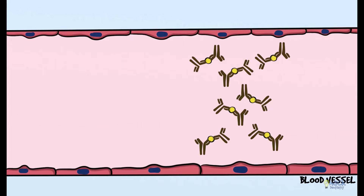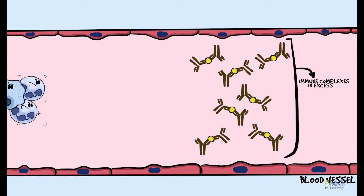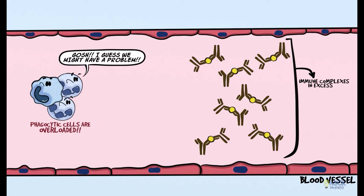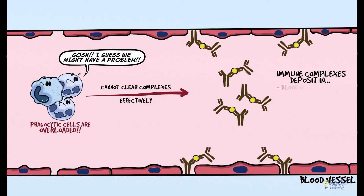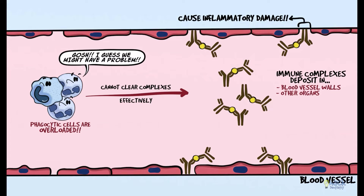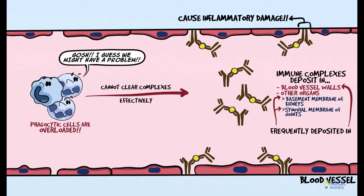The problem arises when these immune complexes are formed in excess. In such cases, factors responsible for removal of immune complexes are overloaded and complexes are not effectively removed. These non-cleared circulating complexes circulate in blood for long durations and begin to deposit in vessel walls and other tissues and organs. Though they can deposit in any tissue, they frequently deposit in blood vessel walls, the basement membrane of kidneys, and the synovial membrane of joints.